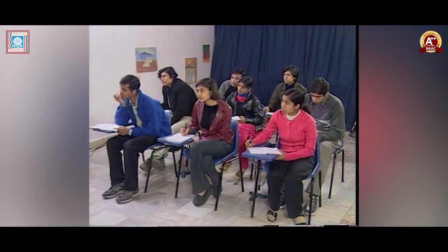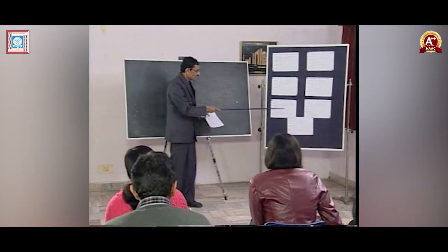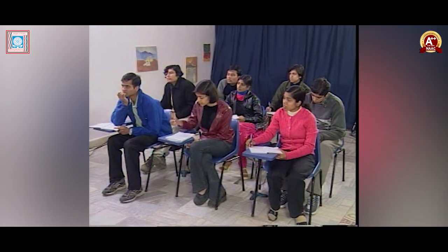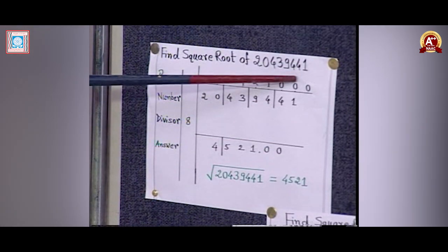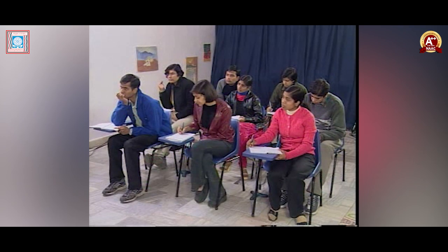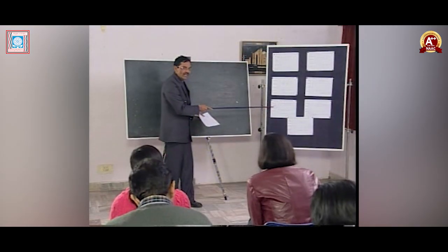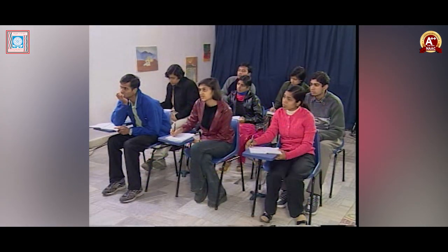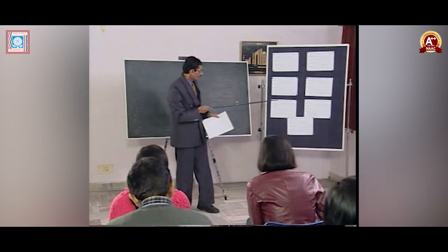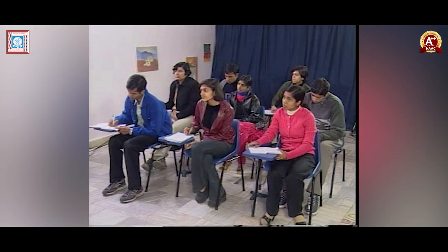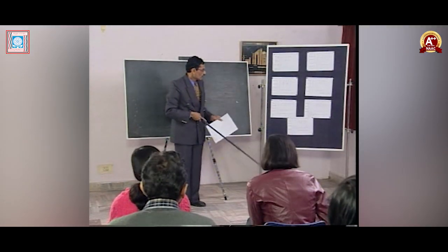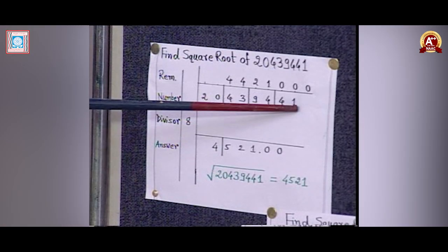Do not discontinue — there are still digits remaining. Next: 04 minus D(5,2,1,0) equals 4 minus 4 equals 0. 0 divided by 8: quotient 0, remainder 0. Then 01 minus D(5,2,1,0,0) equals 1 minus 1 equals 0. 0 divided by 8: quotient 0, remainder 0. Now we discontinue because no digit is left. With 4 groups, place the decimal after 4 digits from the left. The square root of 20439441 equals 4521.